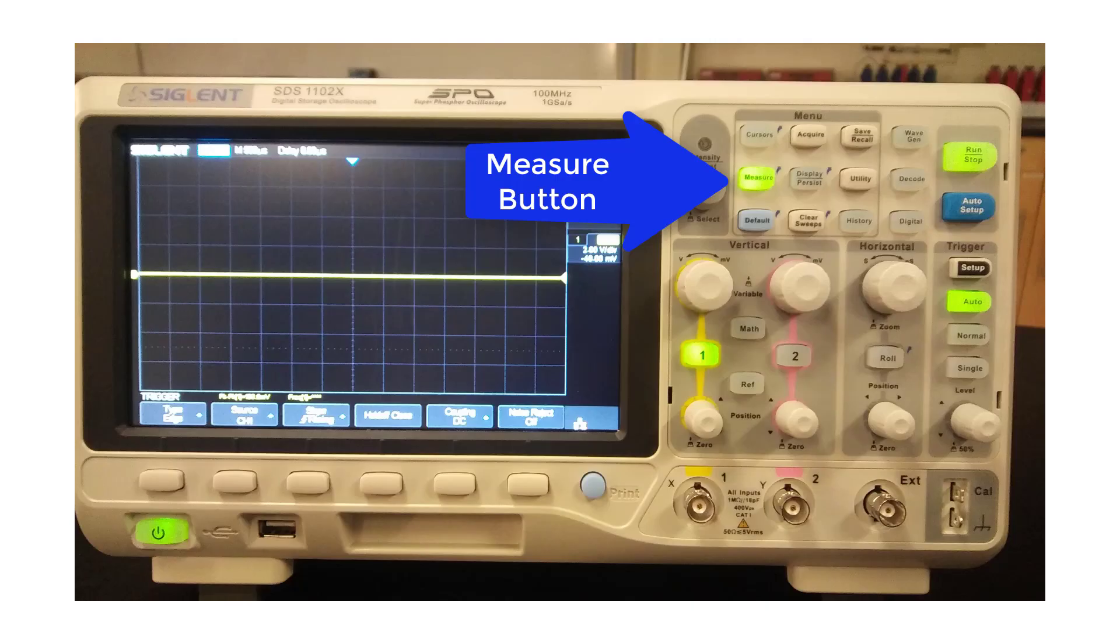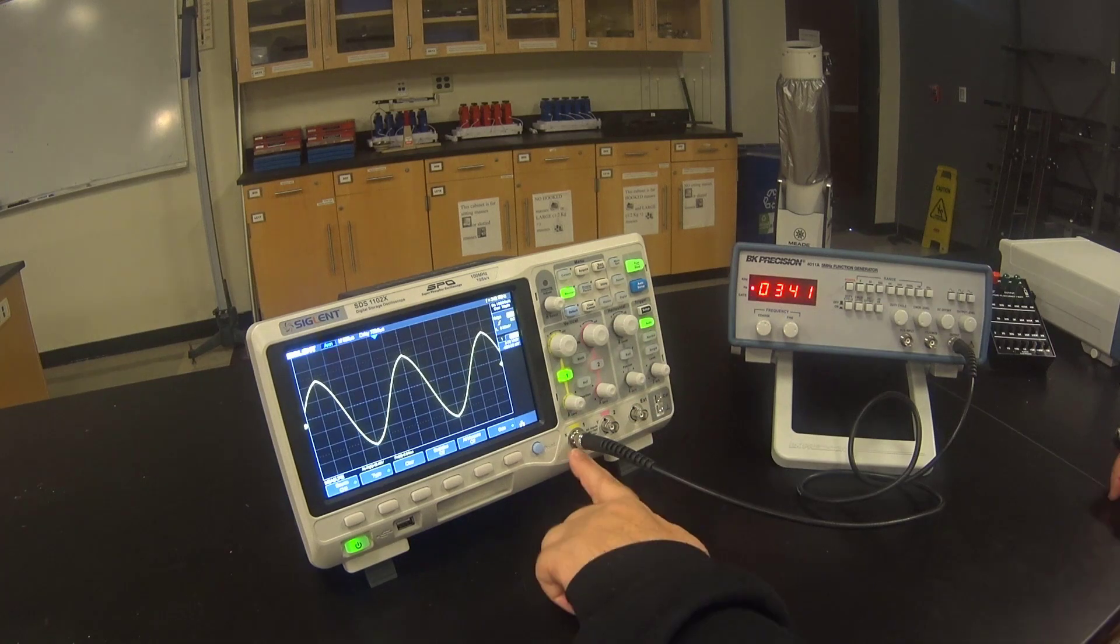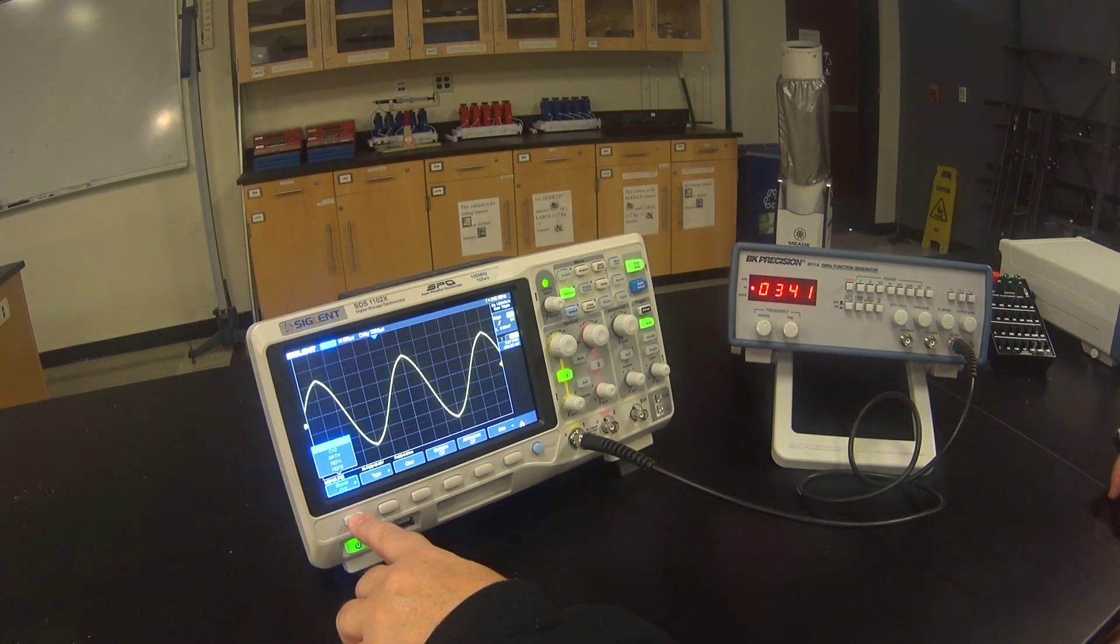A modern scope will measure the peak to peak voltage and frequency for us. Start by pushing the measure button. We're displaying channel 1 right now. If we add more than one signal, we might need to change this source button to channel 1. But it's already there in this case.